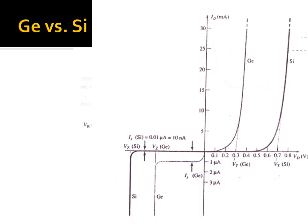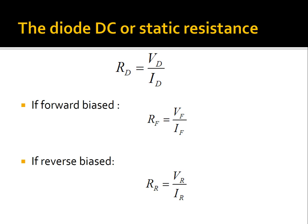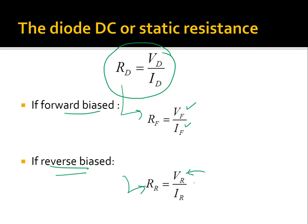The IV characteristics graph shows different curves for germanium and silicon diodes — a question to consider is why the curves differ. The diode DC resistance R_D = V_D / I_D. For forward bias, this is the forward bias resistance: forward bias voltage divided by forward bias current. For reverse bias, it is the reverse bias voltage divided by the reverse bias current. Using these formulas, we can calculate the DC or static resistance of the diode. An example will be solved in the live session.